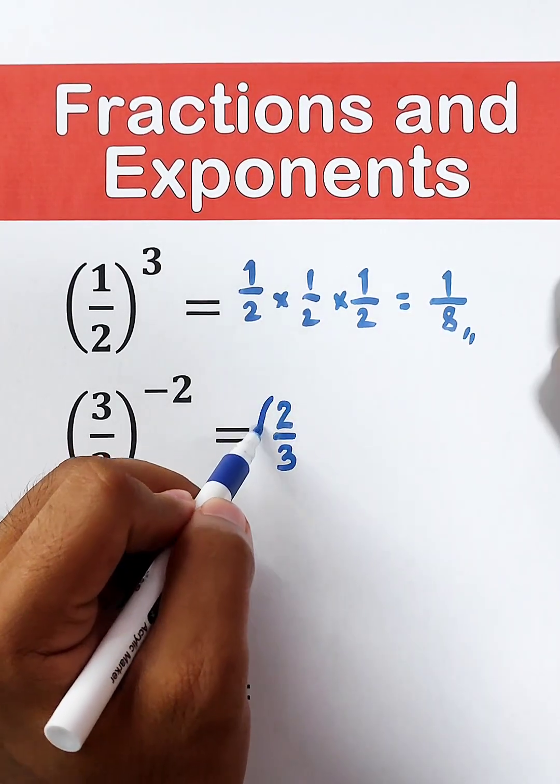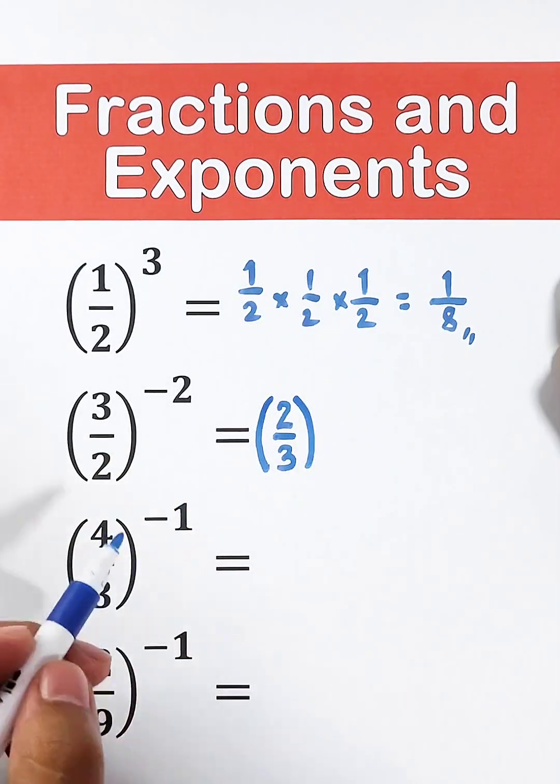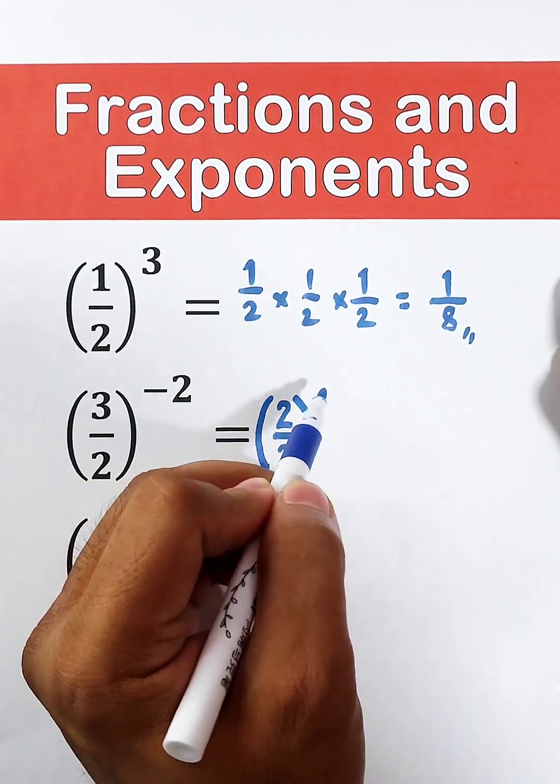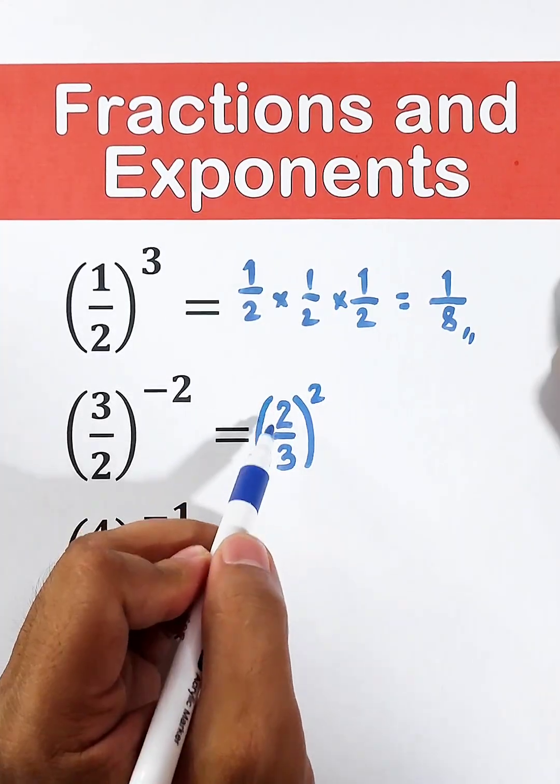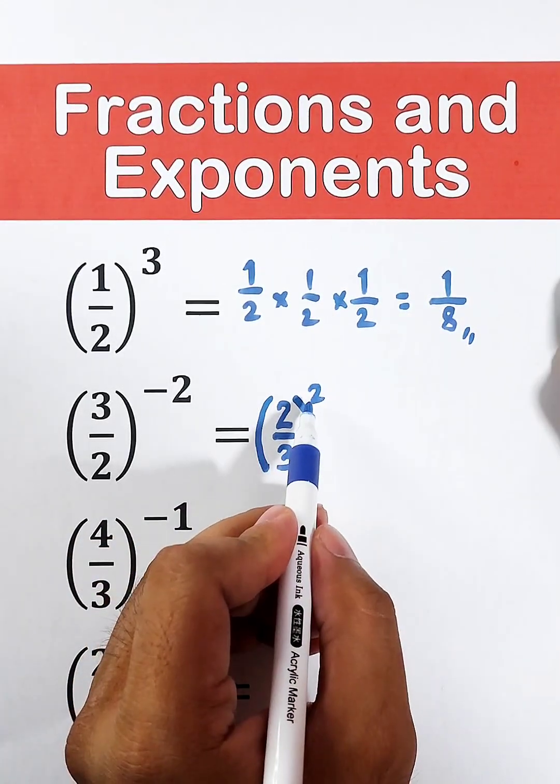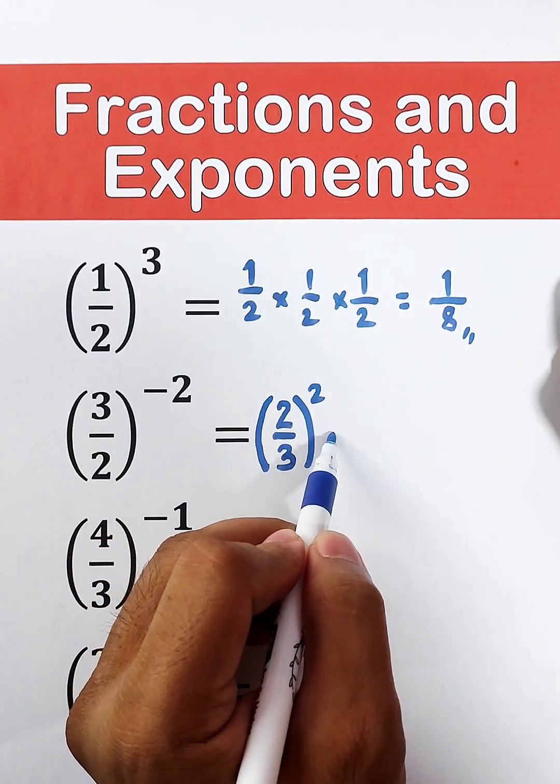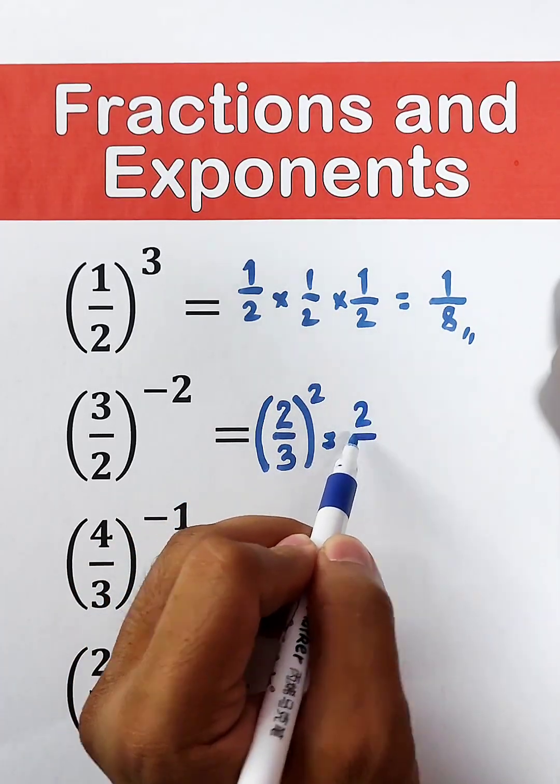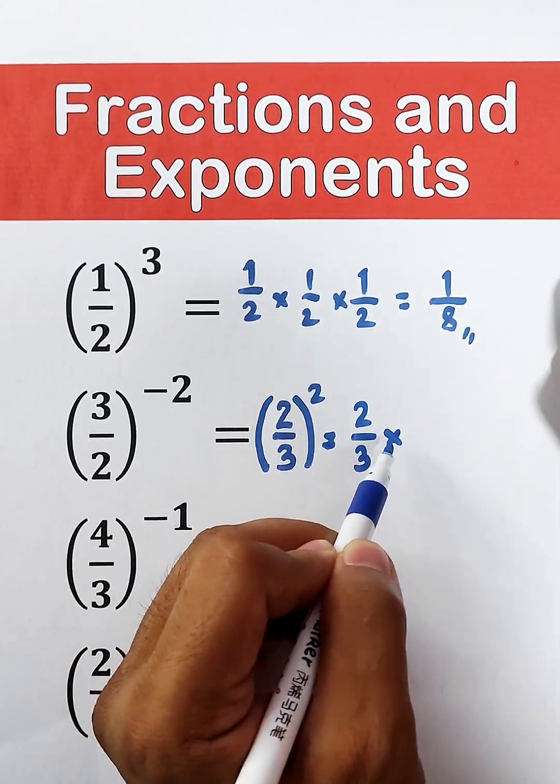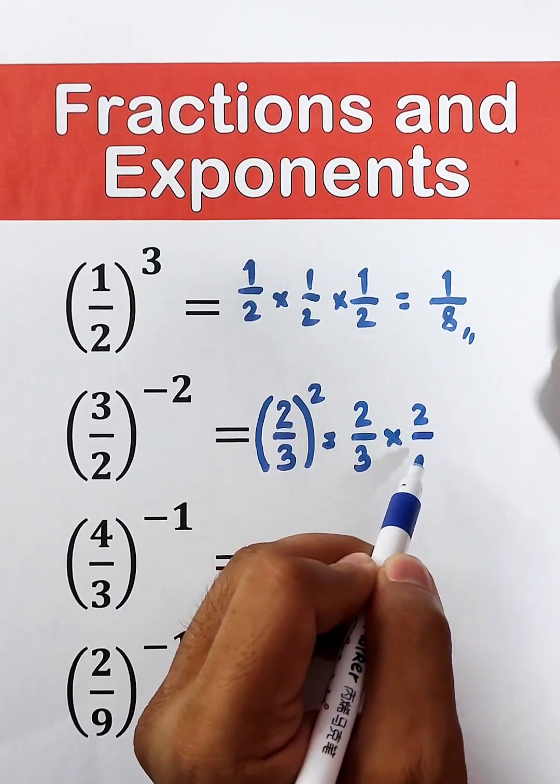In that case, after flipping or getting the reciprocal of your base, this exponent will become positive. So that would be 2 over 3 raised to the second power, and that is the same as 2 over 3 times 2 over 3.